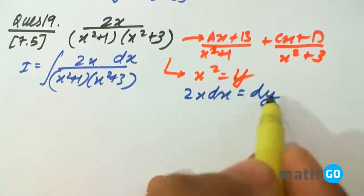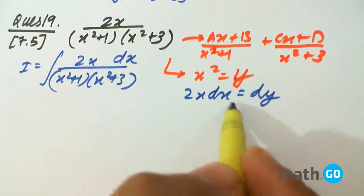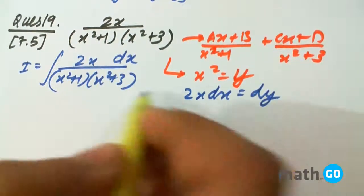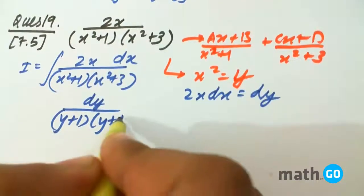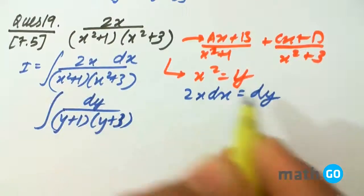The 2x dx can be written as dy. So dy upon y plus 1 upon y plus 3, the integral.